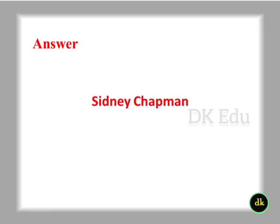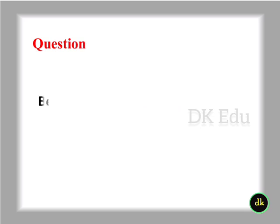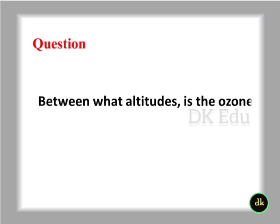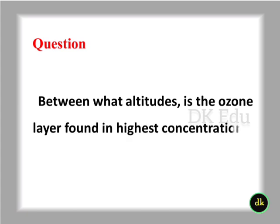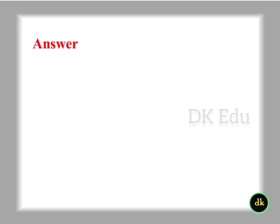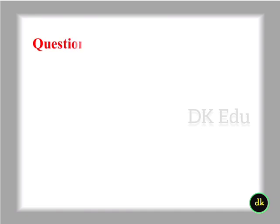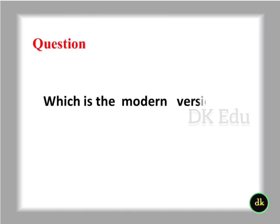Who discovered the formation of ozone from photochemical reactions? Sydney Chapman. Between what altitudes is the ozone layer found in highest concentrations? 30 to 35 km. Which is the modern version of the Dobson instrument?